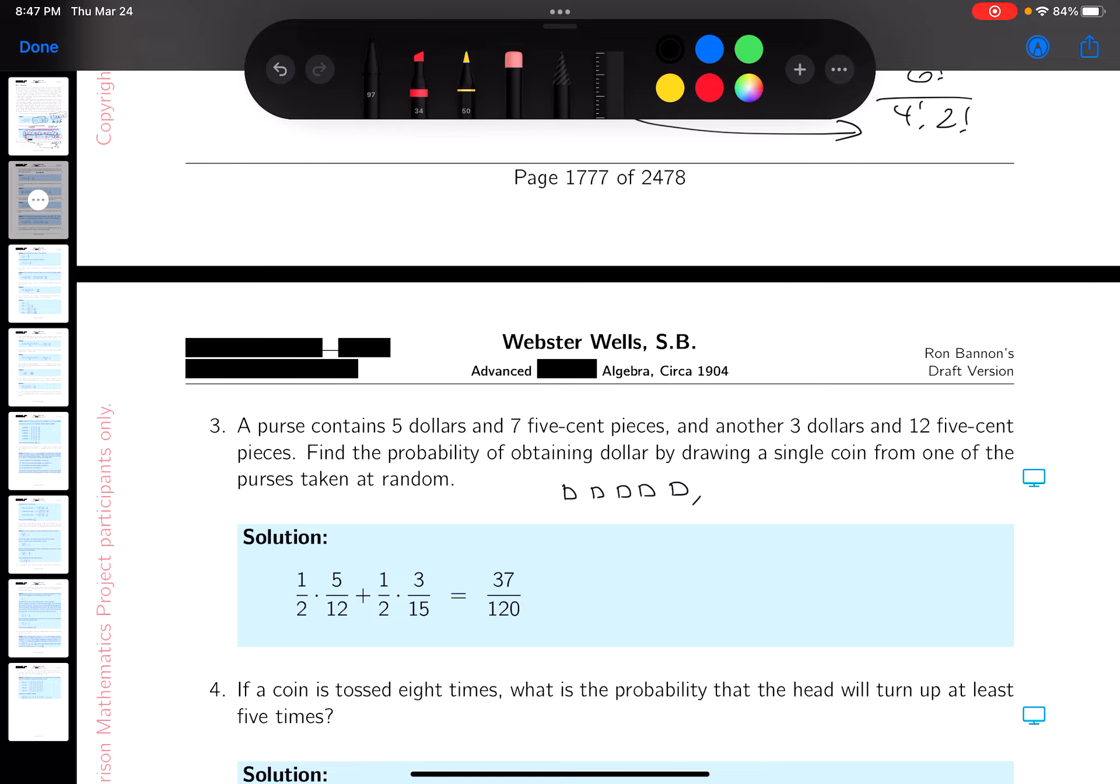I'm going to call them nickels. One, two, three, four, five, six, seven. And another, wait a second, $3. Wait a second, let me read that. A purse contains $5 and seven five-cent pieces. I wrote that down.